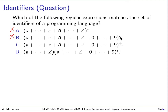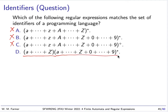Option C is also wrong. The only difference between B and C is that C does not include the empty string, which is true — the empty string is normally not considered an identifier — but it still doesn't force the first symbol to be a member of the Roman alphabet. Option D is correct. The first symbol will be a member of the Roman alphabet, and then all the other symbols, if there are any, will be members of the Roman alphabet and digits.